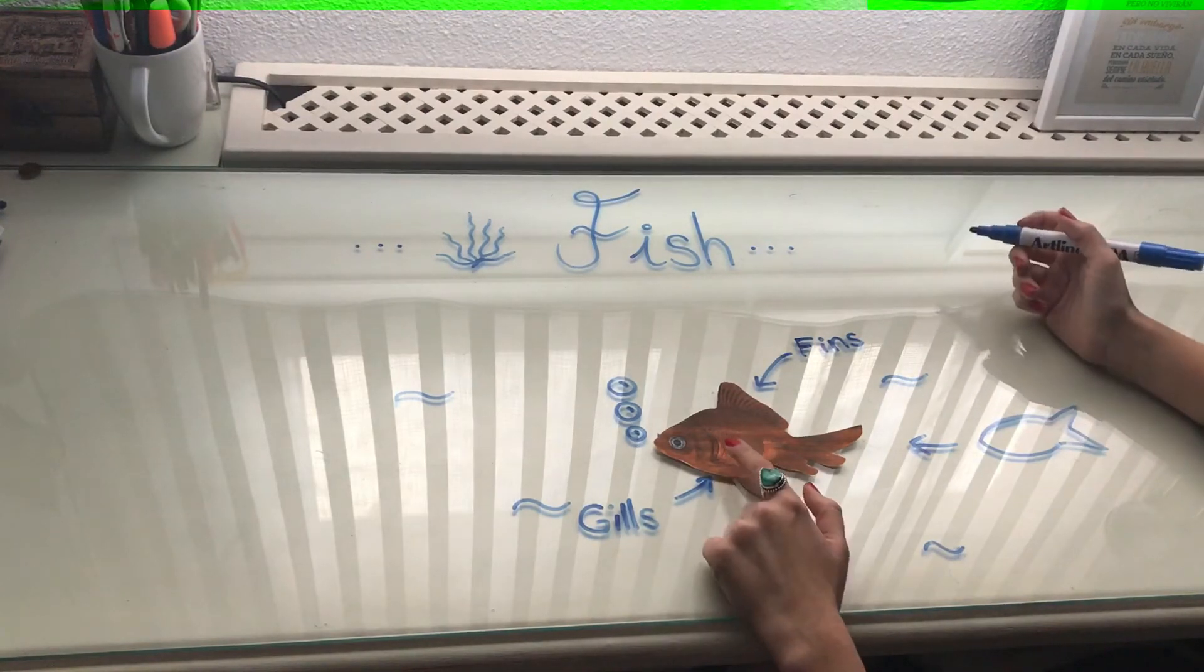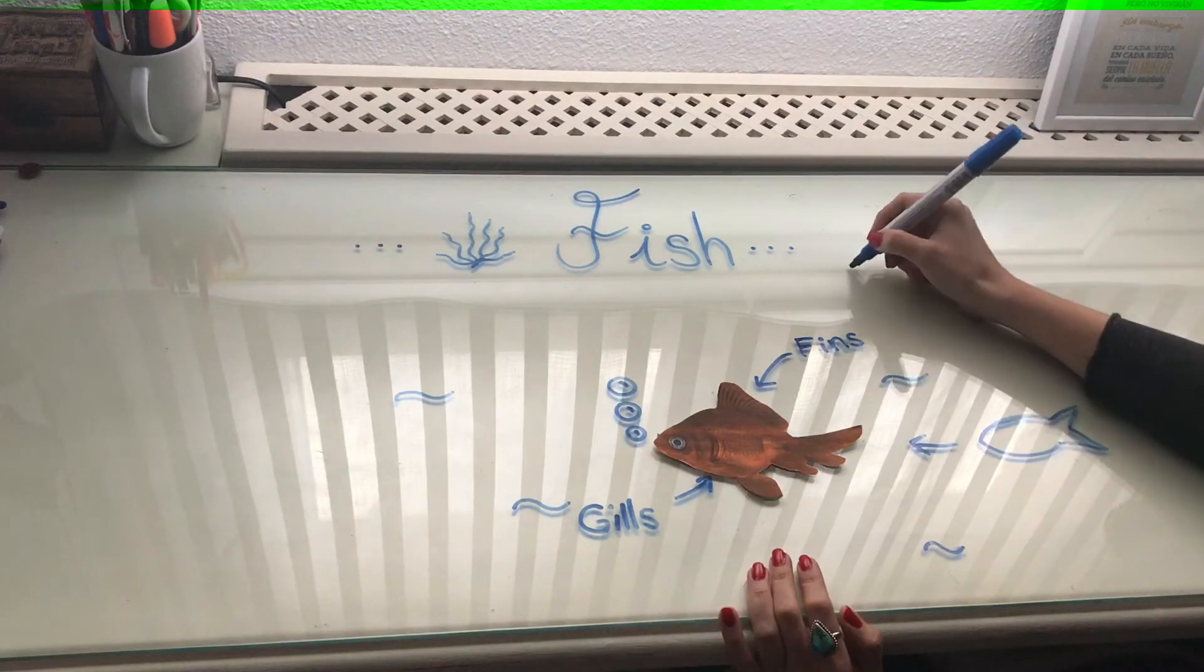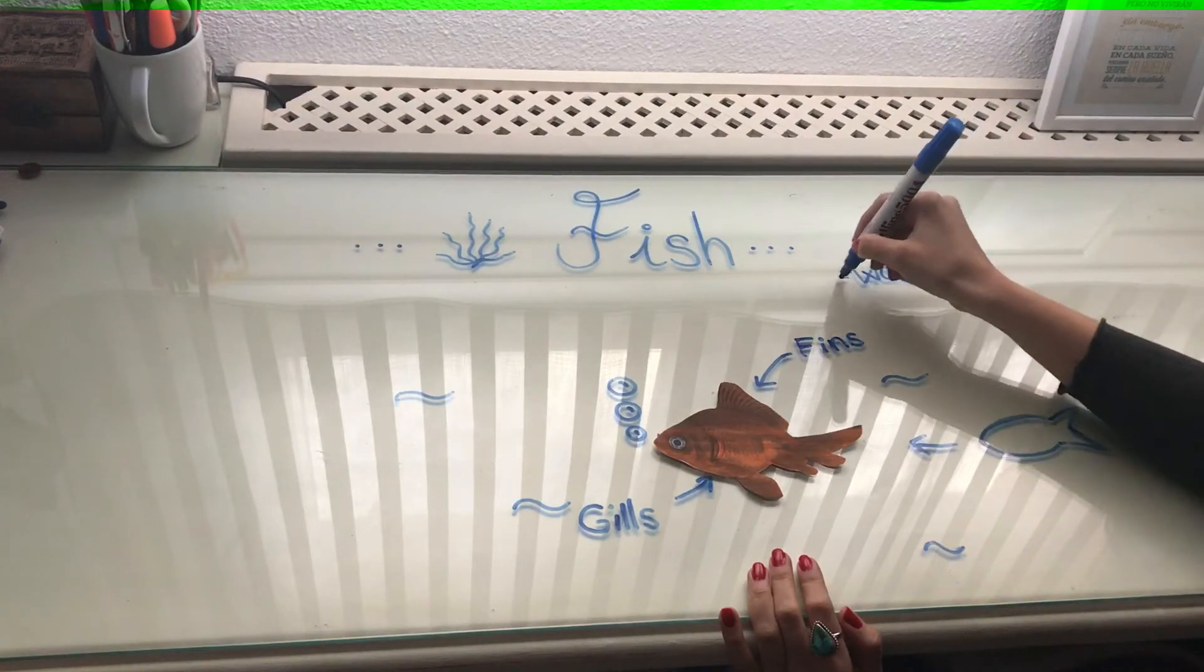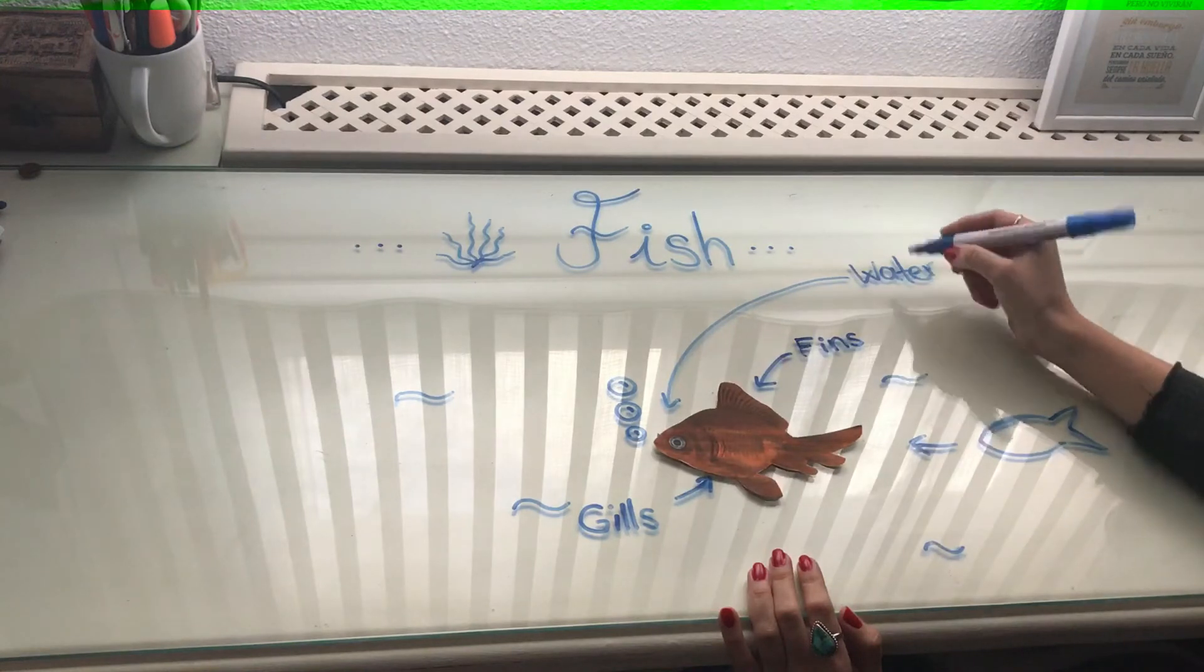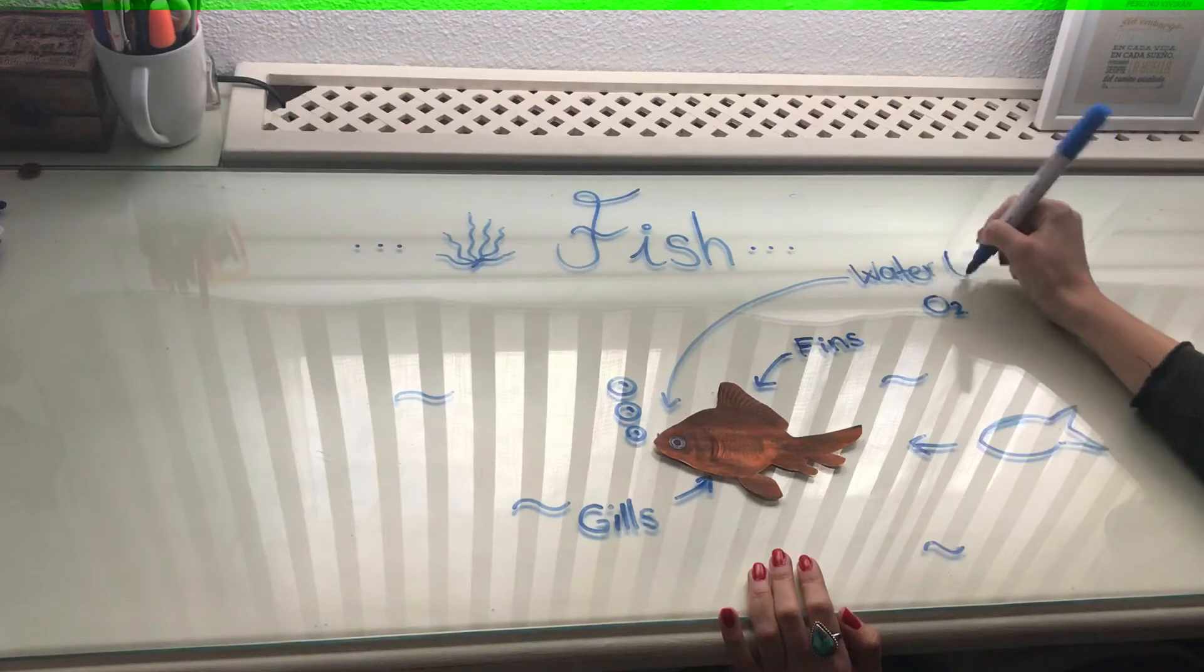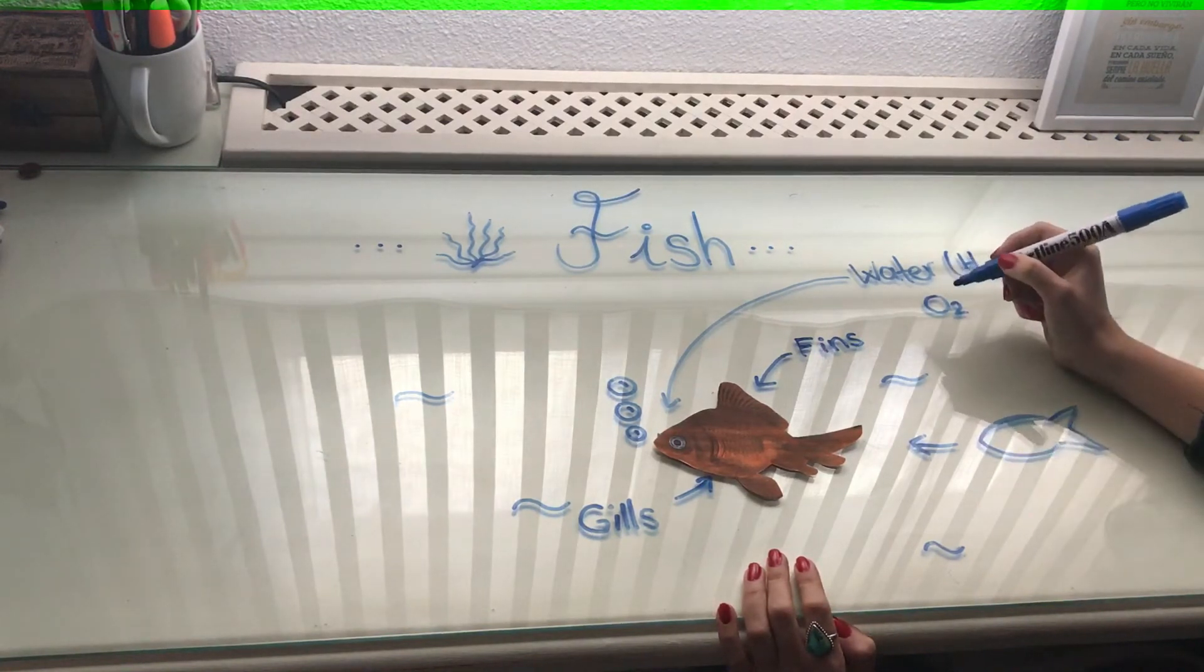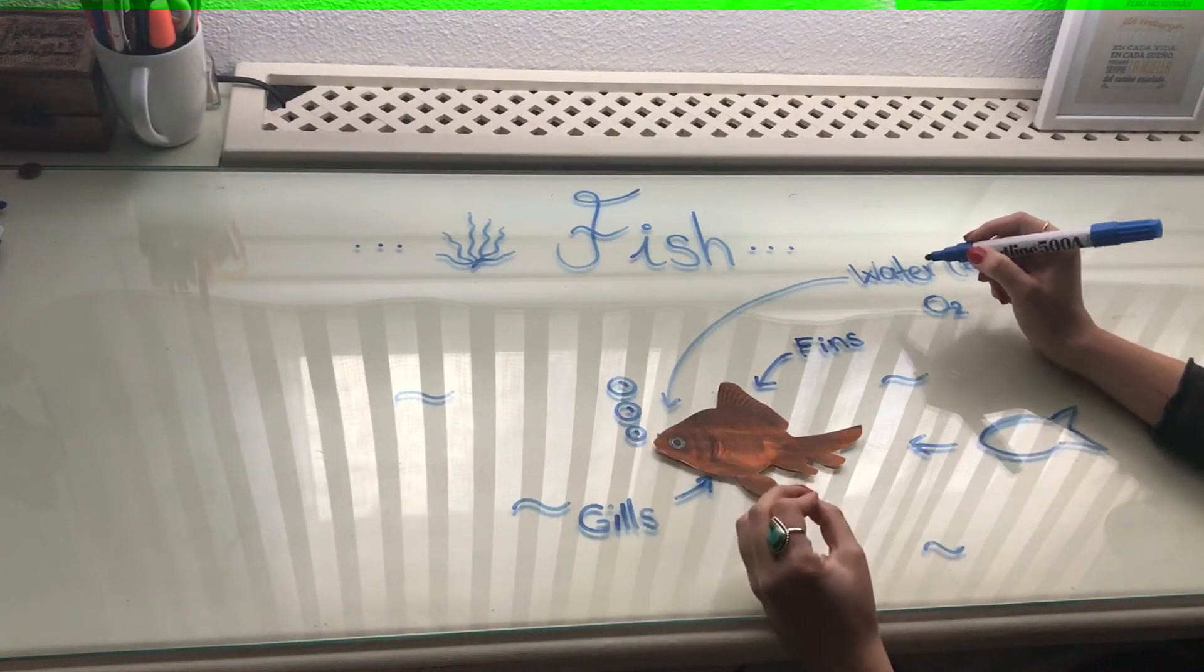How do the gills work? Well, they take the water in through the gills. They go in and they take the oxygen that they need, O2. Well, water is H2O. They take the O2 and what do they do when the water is in the gills?